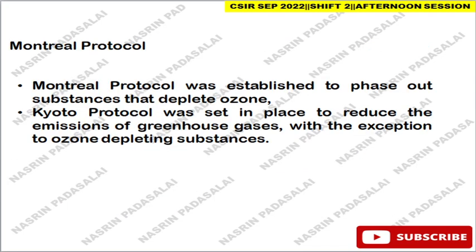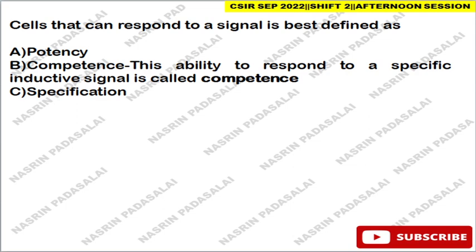Montreal Protocol is nothing but the treaty that establishes a phase-out of substances that deplete the ozone. Whereas the Kyoto Protocol is involved in reducing the emission of greenhouse gases, with the exception of ozone-depleting substances. Next, the cells that can respond to a signal's best difference — this is called competence. Competence is the ability to respond to a specific inductive signal.